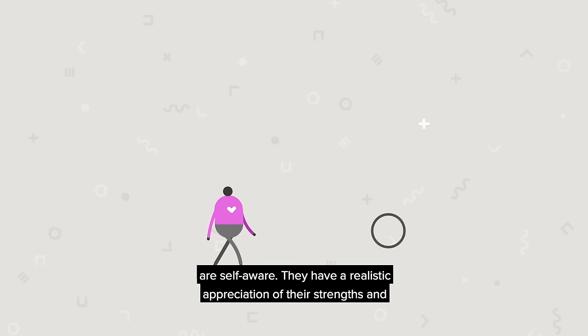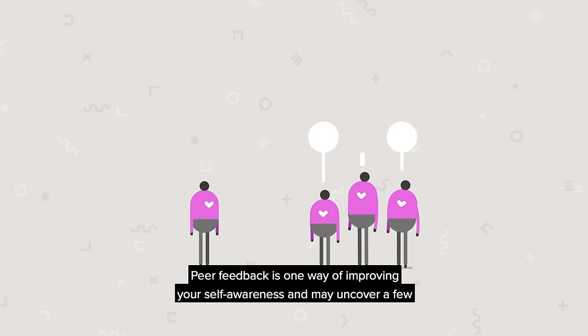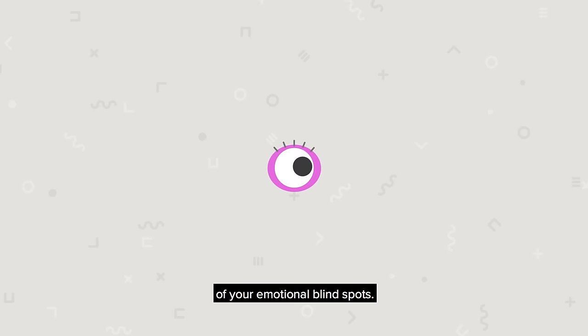Get to know yourself. Emotionally intelligent people are self-aware — they have a realistic appreciation of their strengths and weaknesses and how they come across to others. Peer feedback is one way of improving your self-awareness and may uncover a few of your emotional blind spots.